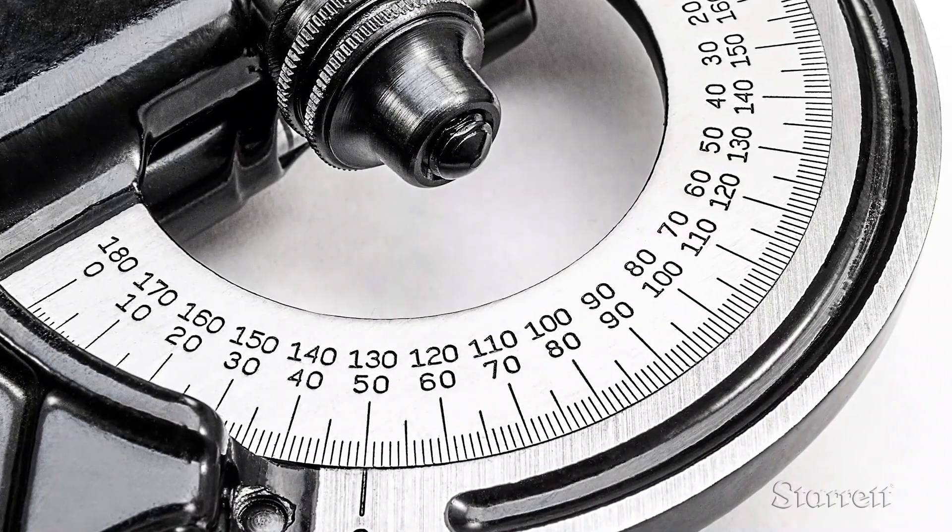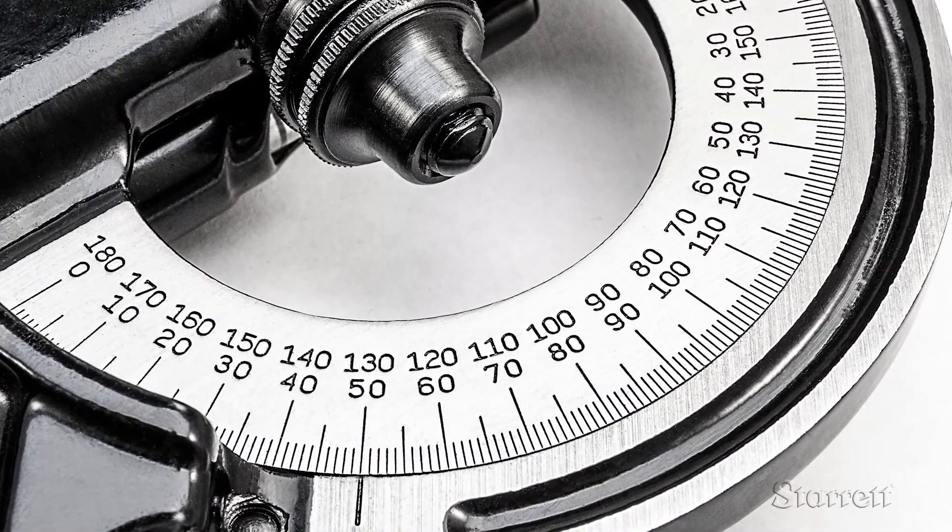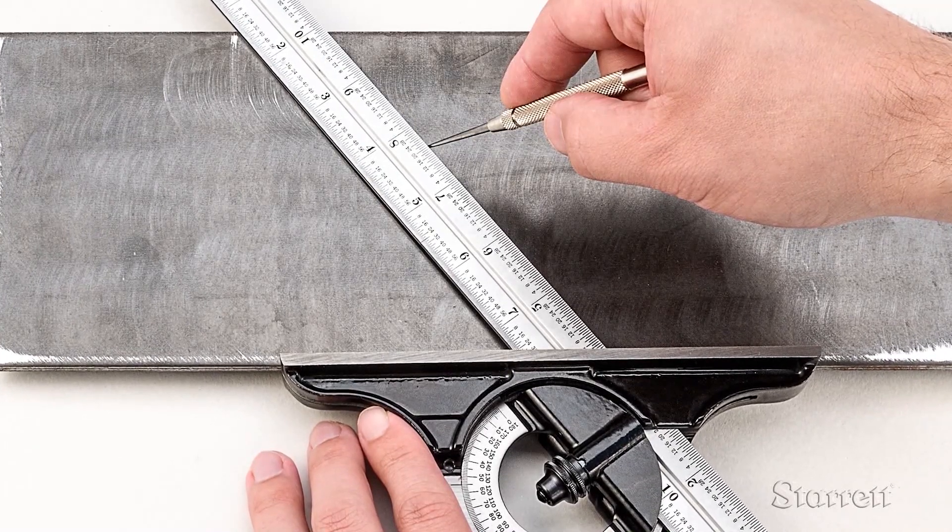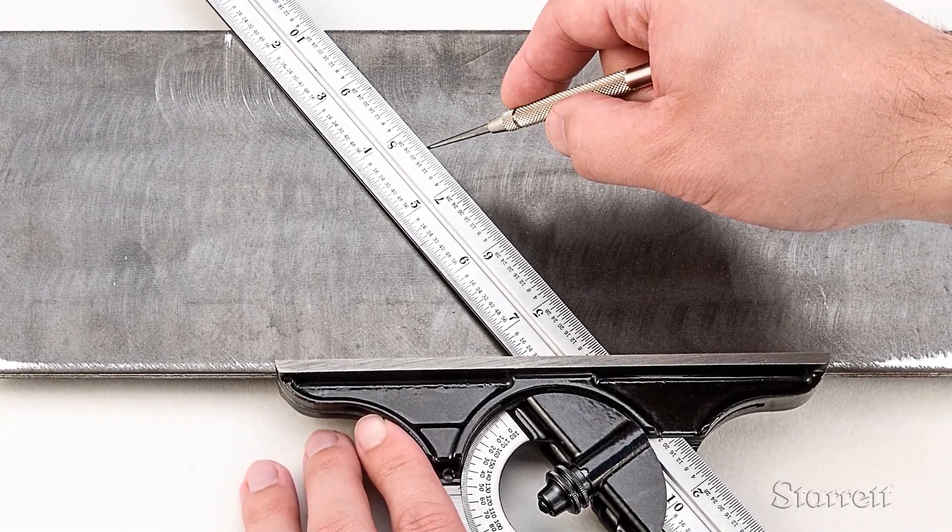In layout work with the protractor head against the side of a part, the rule can be rotated and moved in or out to scribe lines or center punch a spot at a precise distance and angle from origin.